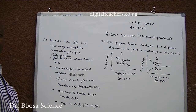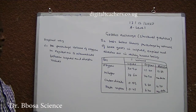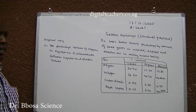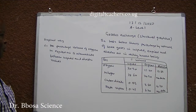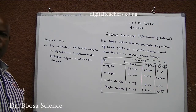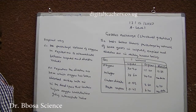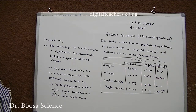The table below shows percentage by volume of some gases in inspired, expired, and alveolar air in resting human beings. Explain why: 1. The percentage volume of oxygen in expired air is intermediate between inspired and alveolar values. On expiration, the alveolar air from which oxygen has been absorbed mixes with air in the dead space that contains higher oxygen concentration, giving intermediate values.